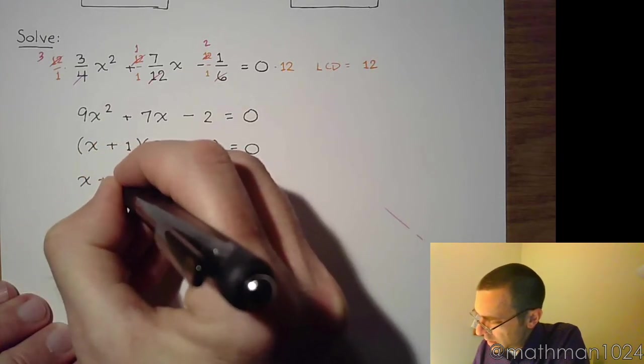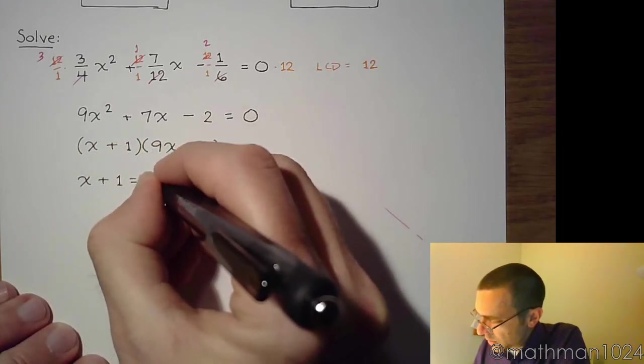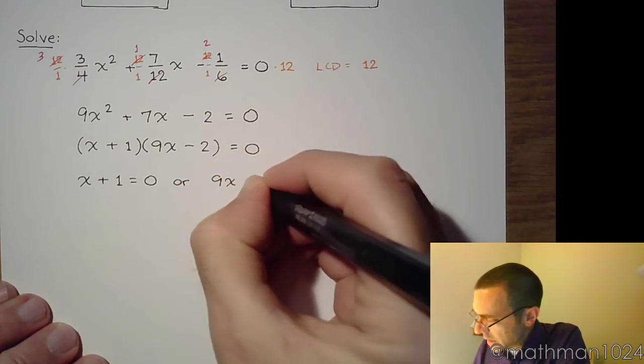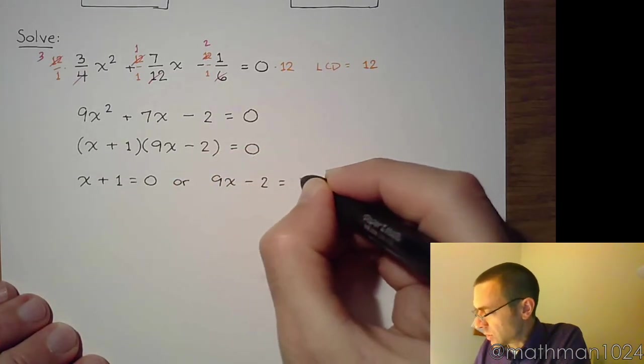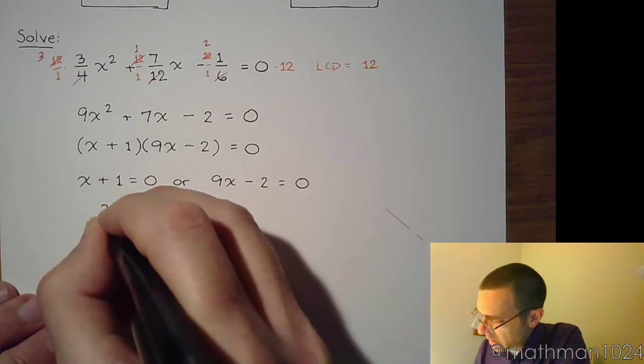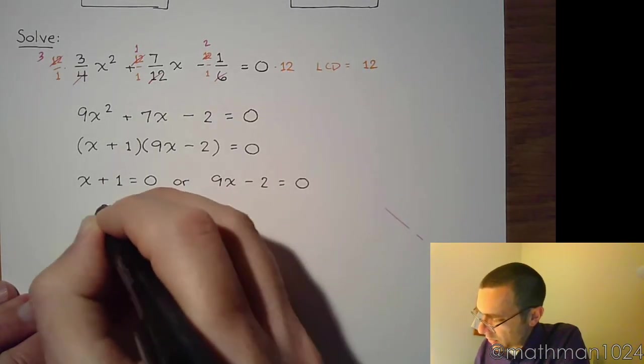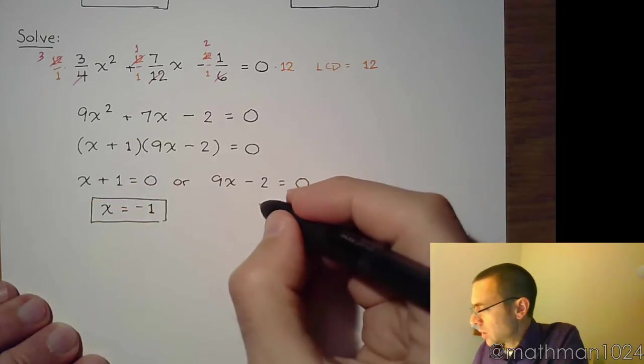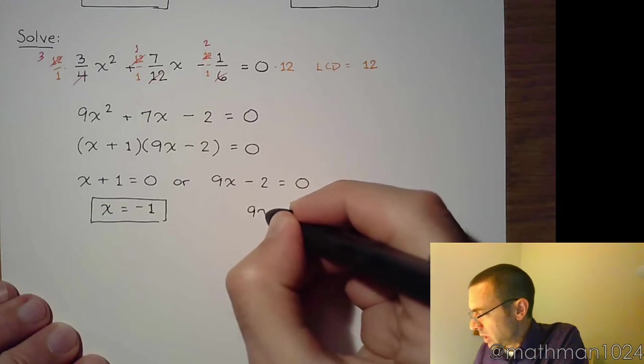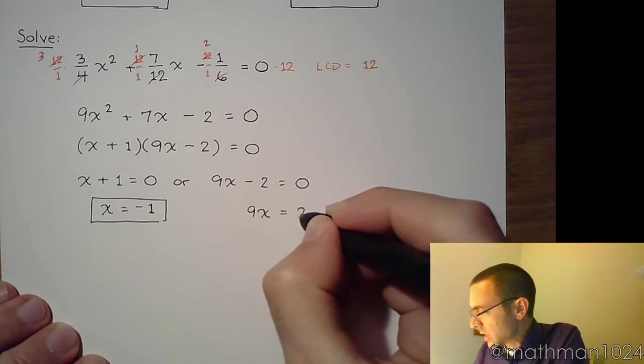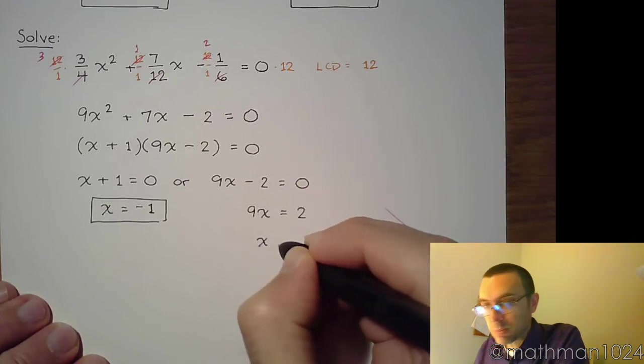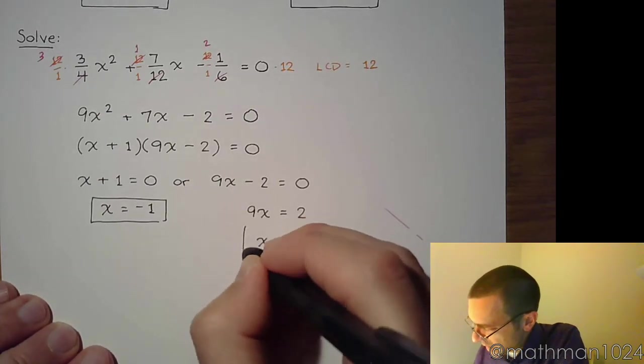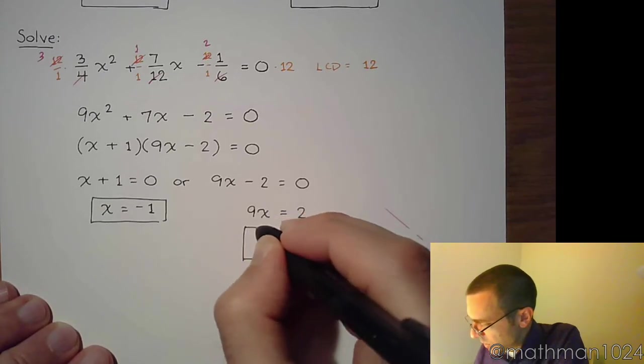So using the zero factor theorem, x plus 1 is equal to 0, or from the other factor, 9x minus 2 is equal to 0. Solving for x, x is equal to negative 1 from here. Or from here, you first need to move the 2 to the other side, and then divide both sides by 9. So our other solution is x is equal to 2 over 9.